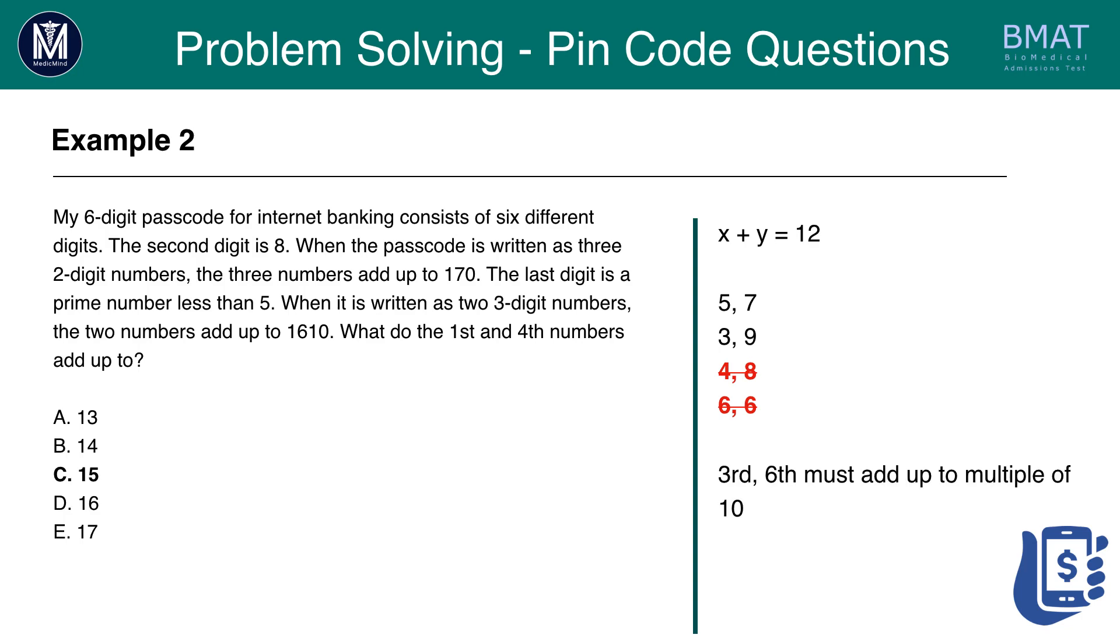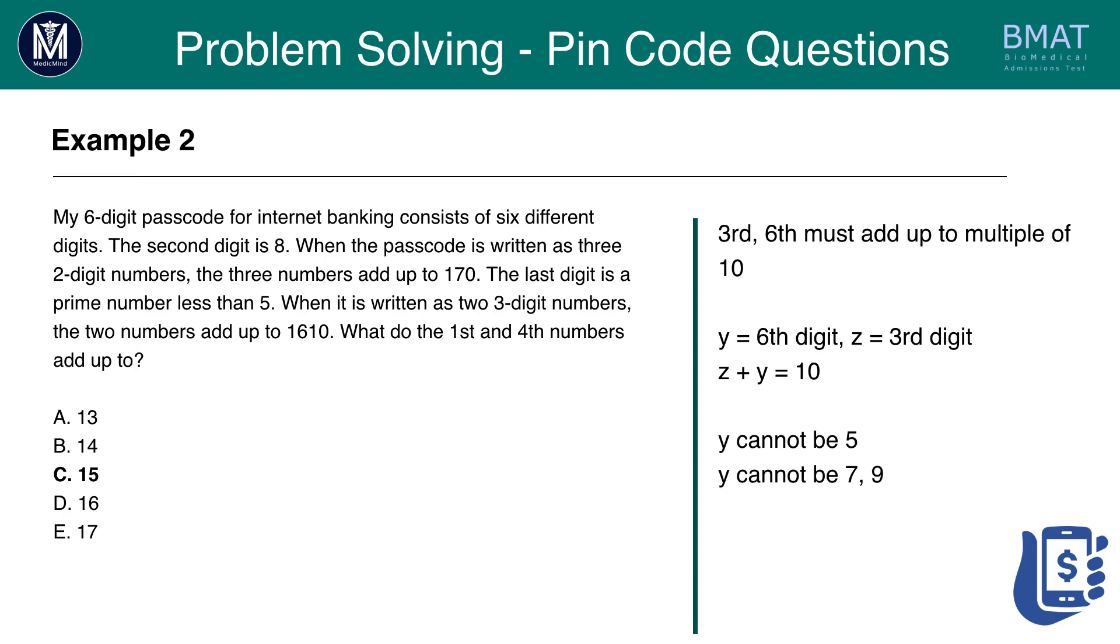We're also told that the third and sixth digit have to be a multiple of 10, since when it is as two three-digit numbers they add up to 170. So the sixth digit is Y as we've already established, and let's call the third digit Z. Let's try Z plus Y equals 10, since the third and sixth digit must add up to a multiple of 10. We know Y can't be 5 because this would mean that Z would be 5, which is not possible because all numbers have to be different. So that rules out 5 for us. Y can't be 7 or 9 either, because the last digit is a prime number less than 5. That leaves us with one option only. Y has to equal 3.